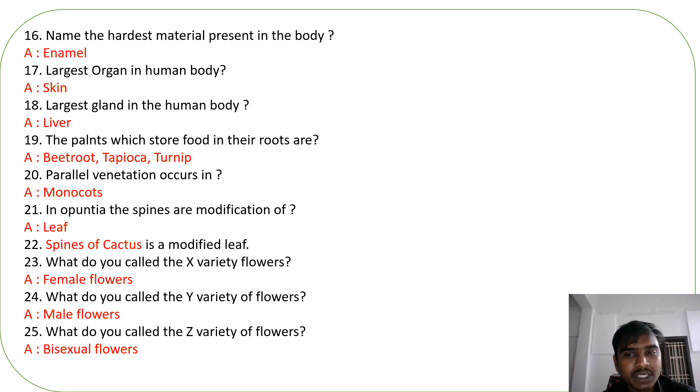Largest gland in the human body. Liver. Liver secretes the bile juice. The plants which store food in the roots are beetroot, tapioca, turnip. Parallel venation occurs in monocots. Reticulate venation occurs in dicots.